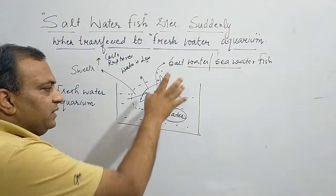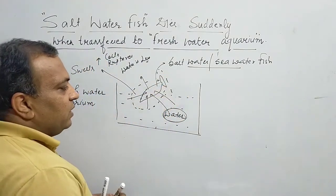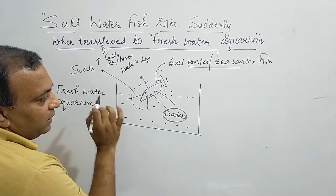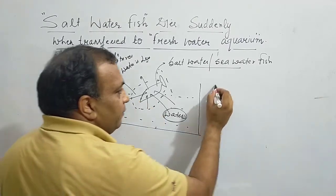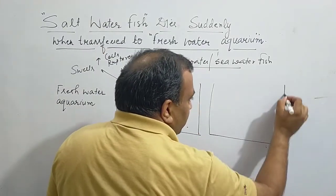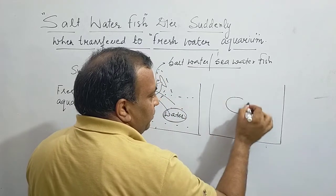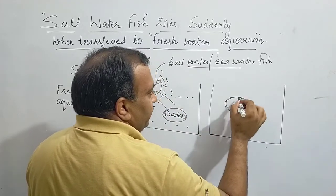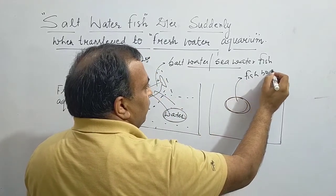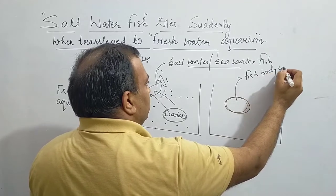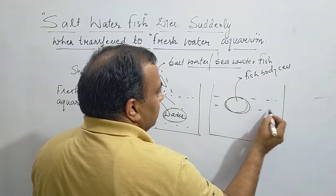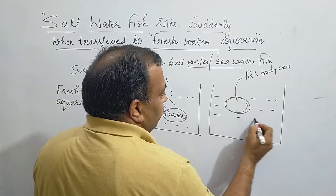When we talk about the body of the fish — the animal cells — this is a fish body cell, and this is pure water. The water enters into the body of the fish cells due to osmosis.